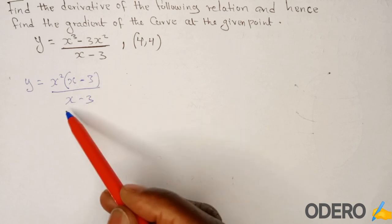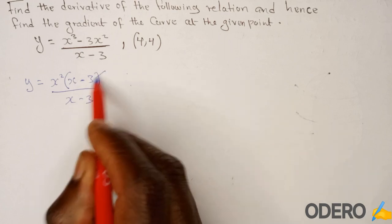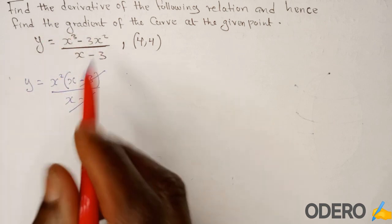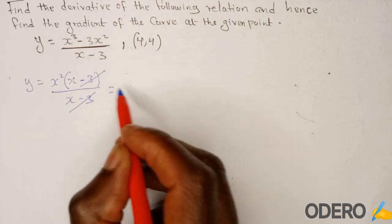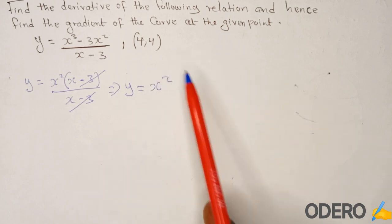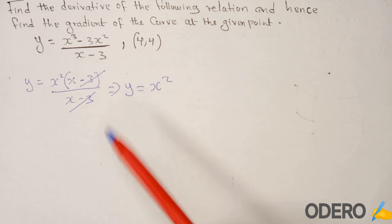So these two factors are common. They are the same, you can just cancel them out like that. So if this one is simplified, you remain with y equals x squared. That is now your simplified function.